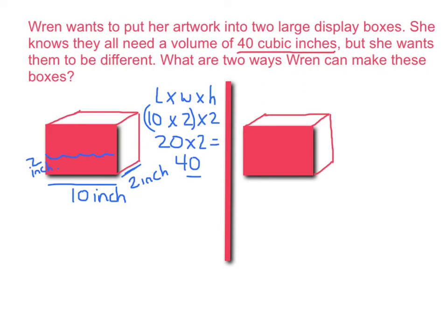So let's try another example in the box next to it. Now let's think of three measurements for a length, a width, and a height that would equal the value of 40 cubic inches. Let's try our length as 5 inches. Our width could be 4 inches, and our height could be about 2 inches.